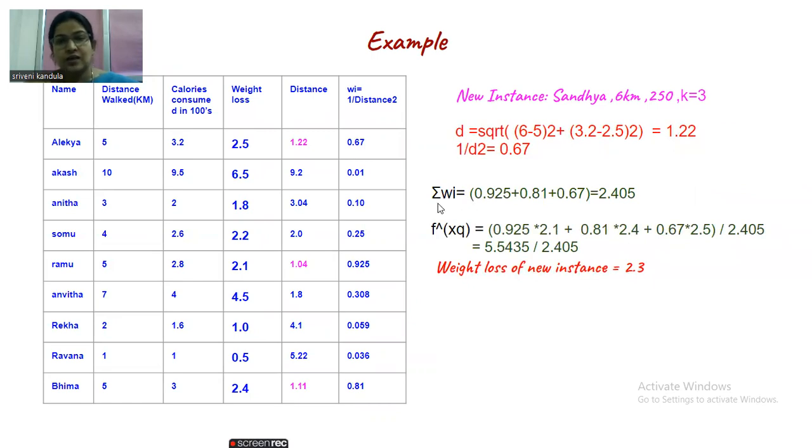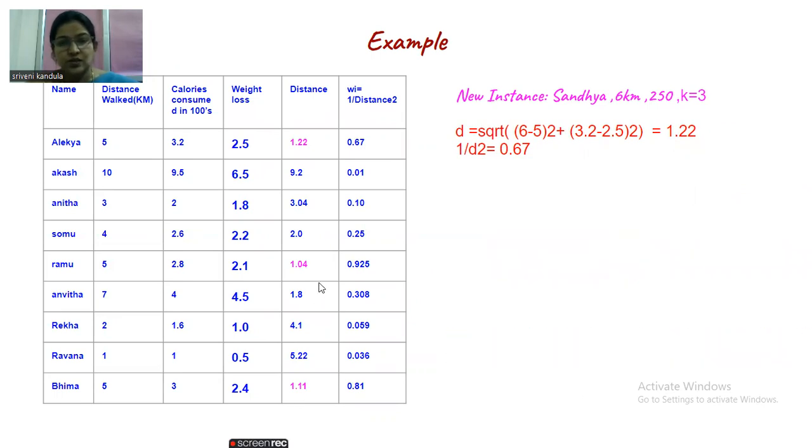The same distance calculation and 1 by d square calculation. And now we have to calculate, we have identified three nearest neighbors also. So based on the least value that we have obtained, we have identified three nearest neighbors. Here k value is three, so we took three nearest neighbors. You can see the color differentiation.